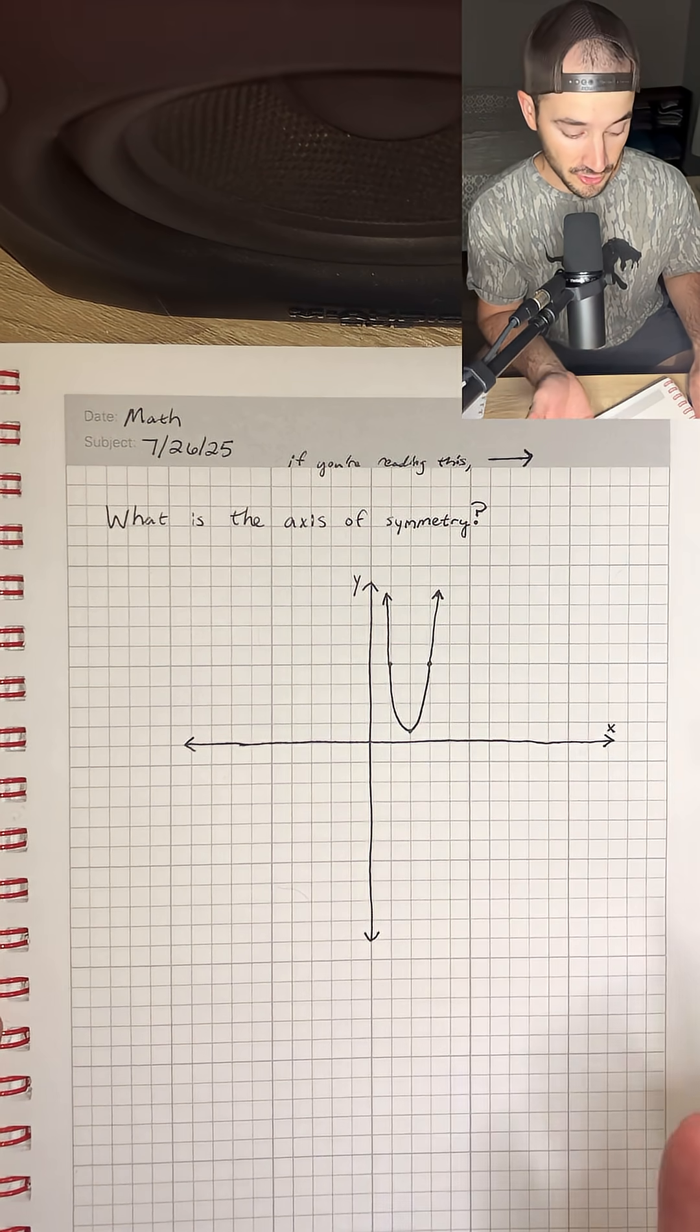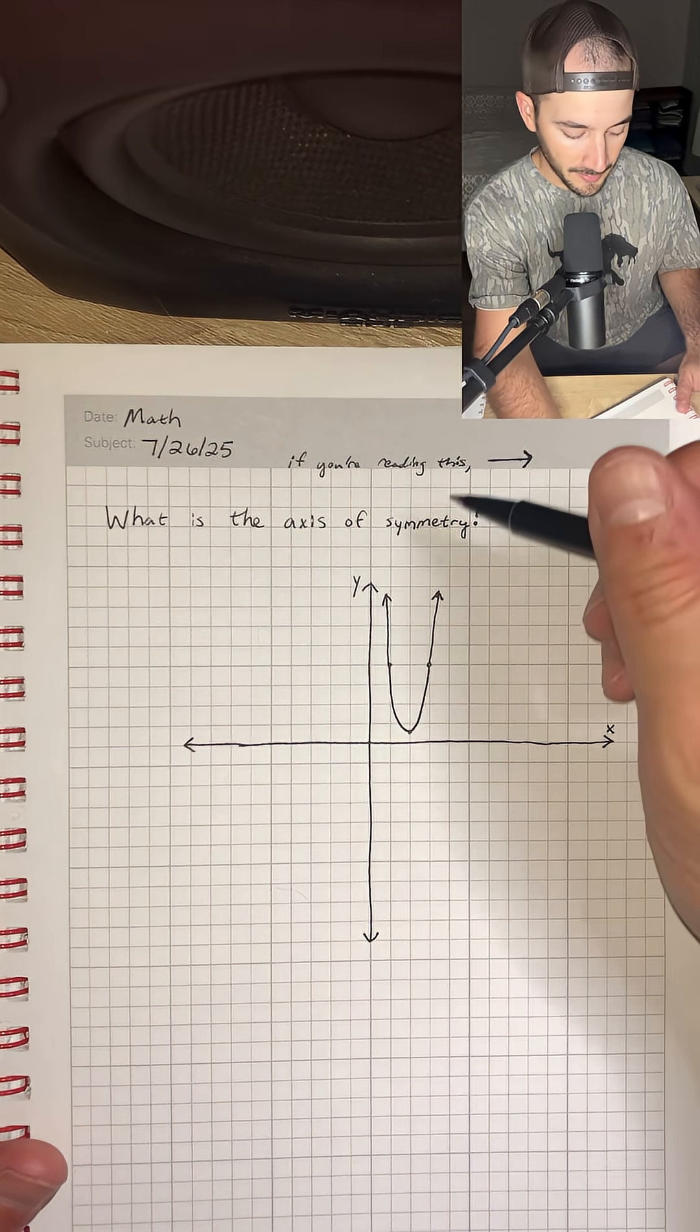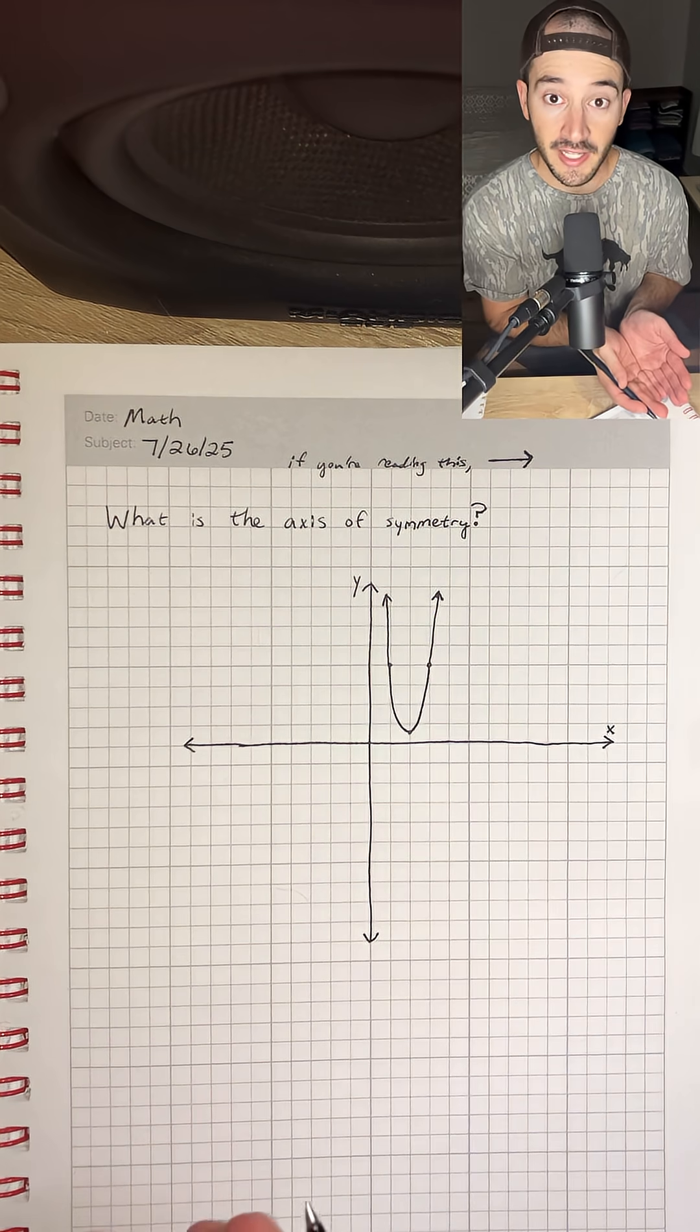and we want to find its axis of symmetry. So the axis of symmetry is just some line that we can draw down the middle of this parabola, and it's going to divide it in half, kind of like a mirror.